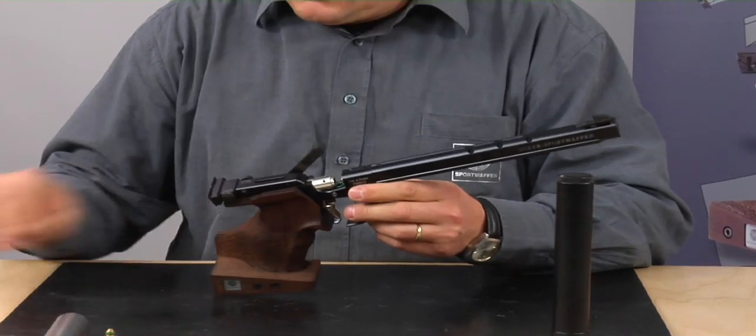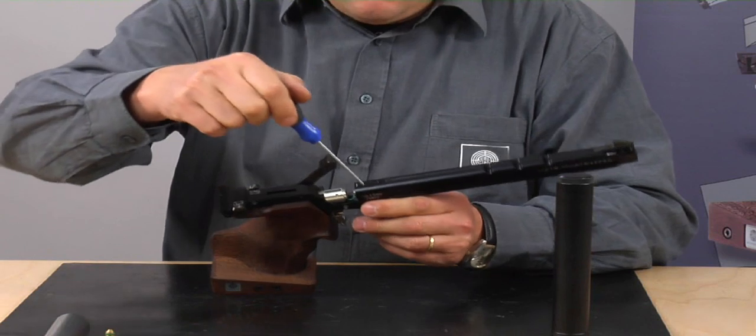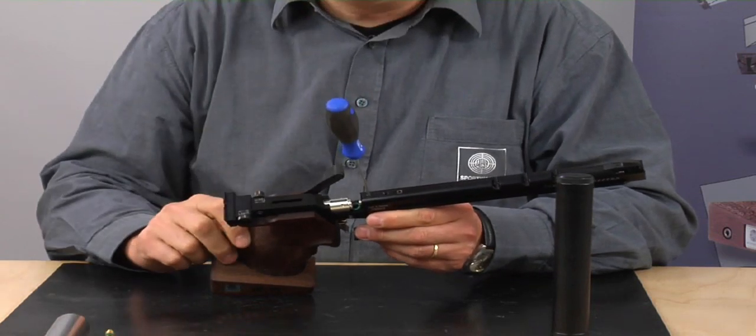You remove the CO2 cylinder from the pistol. Open these two screws a few turns in order to draw out the barrel.